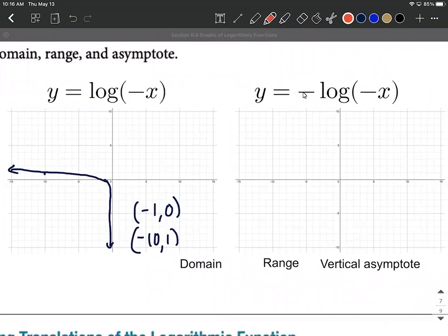How I'm going to classify this one is we have a negative attached to the entire function. That's going to be a vertical reflection or a reflection with respect to the x-axis is another way to say the same thing.